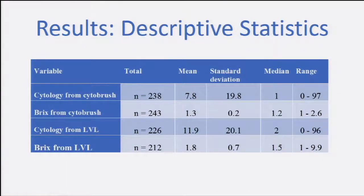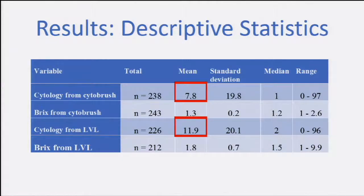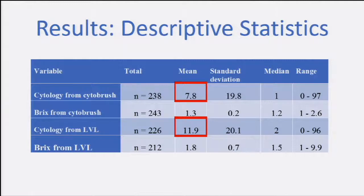For the descriptive statistics, the PMN percentage was higher in lavage samples versus cytobrush. This is because when you're doing the flushing, you collect a larger surface of the endometrium, and when you put this sample in the centrifuge, you are concentrating the number of PMNs and will have a higher number in the sample. It's quite logical.